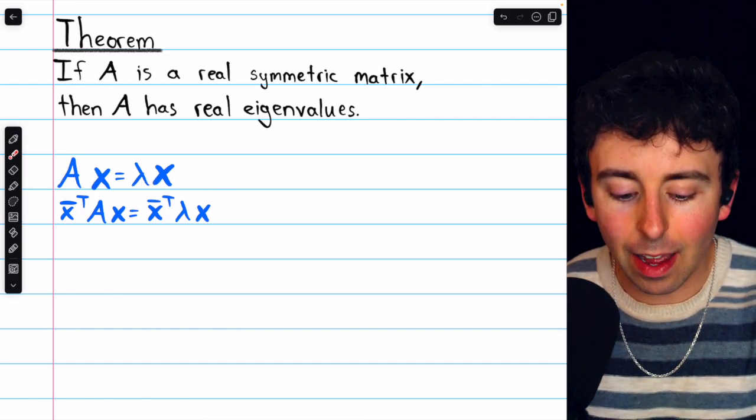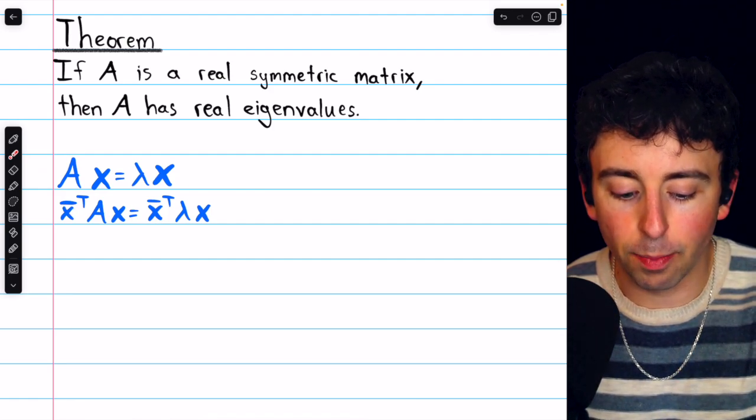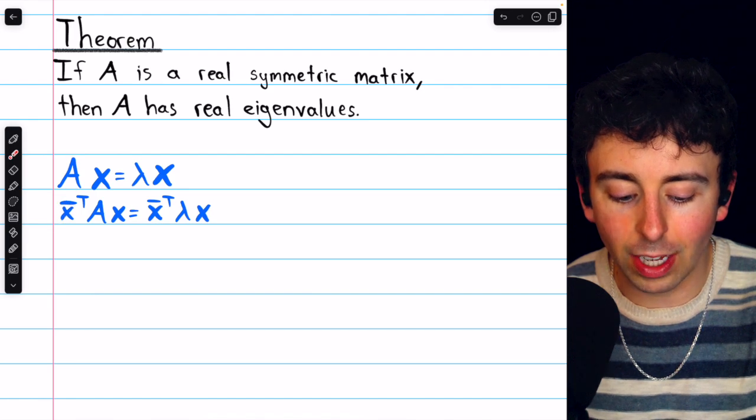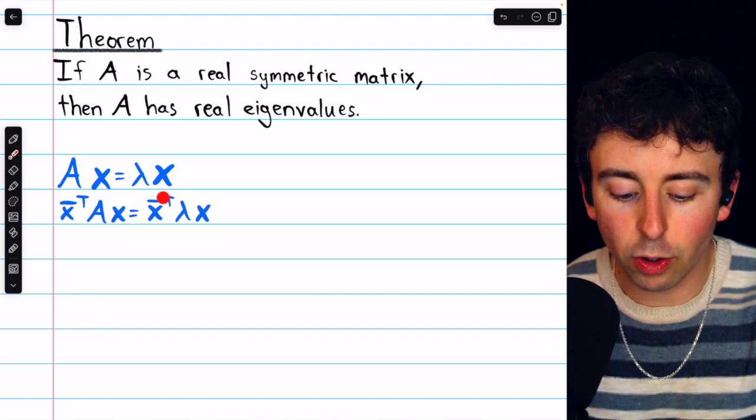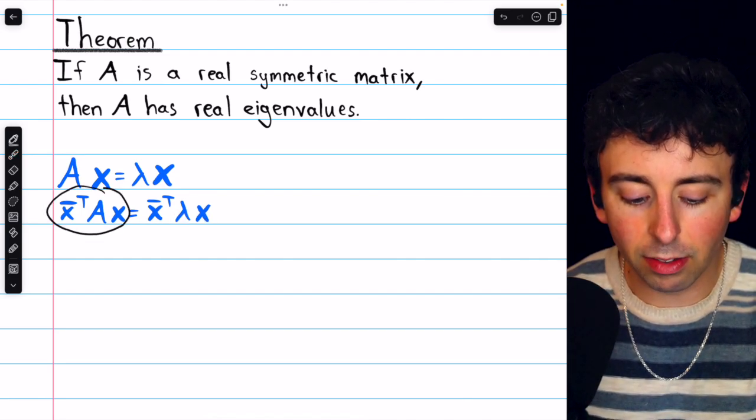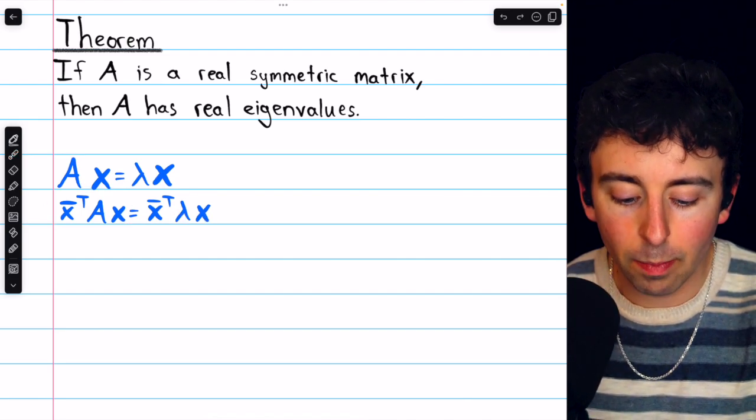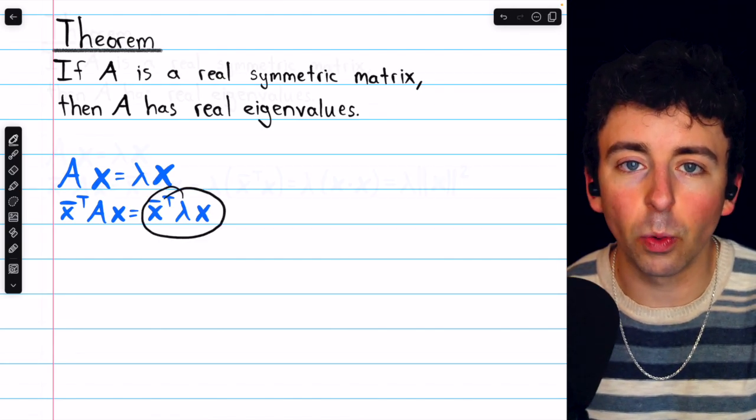Now on the left of both sides of this equation, we'll multiply by x conjugate transpose. So we have x conjugate transpose times A times x equals x conjugate transpose times lambda times x. Now the left side of this equation we're just going to leave for now, but the right side we're going to work with a bit, and we'll be able to simplify it in an interesting way.